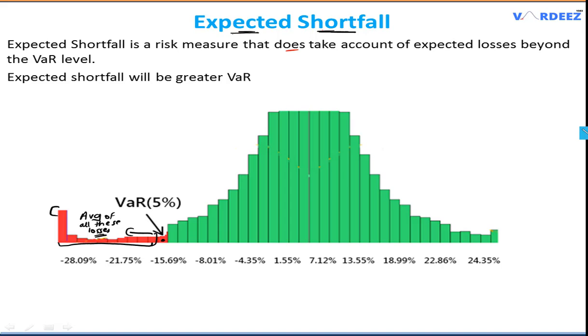One more important thing: expected shortfall will always be greater than the VAR level because we're taking the average of losses which are greater than the VAR.